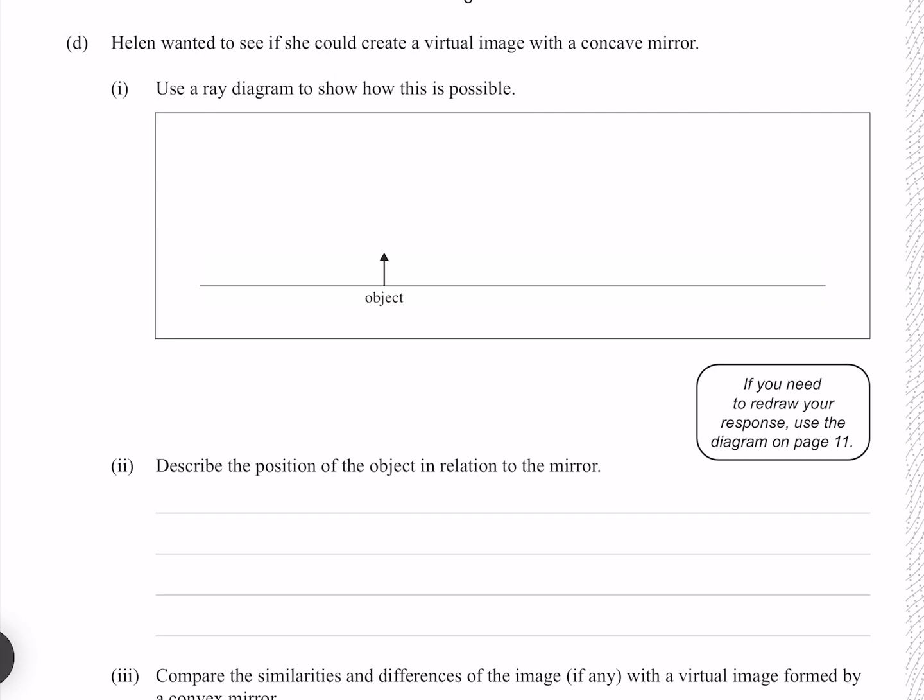Helen wanted to see if she could create a virtual image with a concave mirror. Use a ray diagram to show how this is possible. A concave mirror will produce a virtual image if the object is within the focal. So if we draw our mirror axis here and our focal length here.